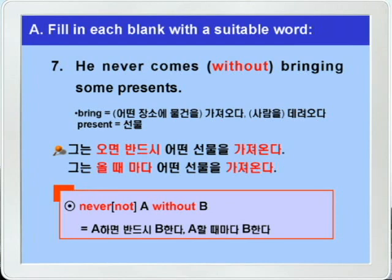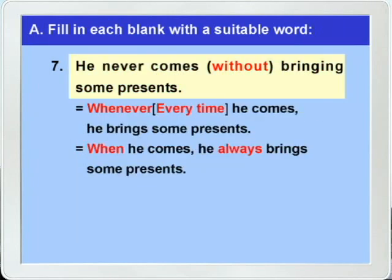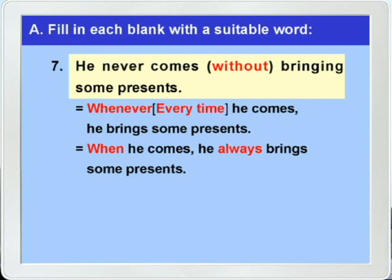정답을 다시 정리해보고 이 문장을 다른 표현으로 써보겠습니다. 이렇게 'Never A without B'나 'Not A without B'는 'A하면 반드시 B한다, 다시 말해 A할 때마다 B한다' 이런 뜻이었죠. 그래서 whenever, every time 이렇게 바꿔 쓸 수 있고, when과 always를 함께 써서 바꿔 쓸 수가 있다고 우리가 앞에서 배웠습니다.